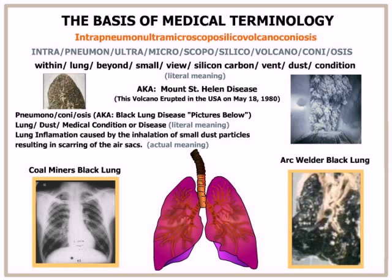In almost every case when you combine individual word parts, you must have a vowel between the word parts. When we combine the next word part, neumon, with the next word part, ultra, you can see that ultra begins with a U, so we do not have to take the word neumon and add an O to it. The U is already there as the combining vowel. At the end of the word part ultra, it ends with an A, so we can combine it to micro. Now micro, scopo, silico, volcano, and conio all have a combining vowel of O.